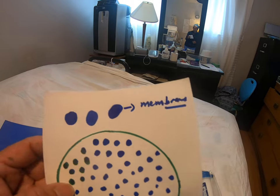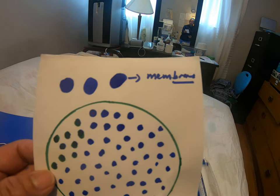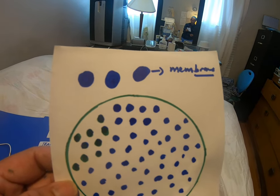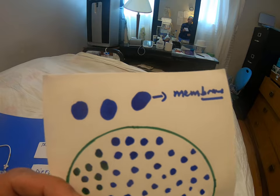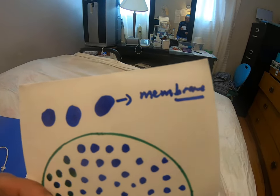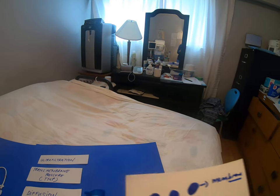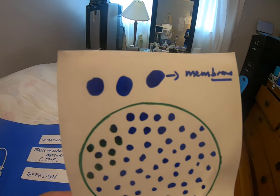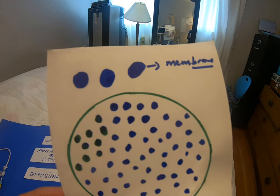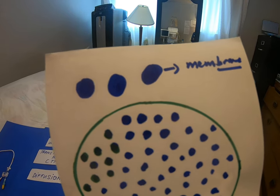Around each fiber we have a membrane. Inside the fiber is where blood flows. So blood is inside each fiber, and outside the fiber is our dialysate. The blood and the dialysate are separated by that membrane. The inside of the fiber — where blood is — has positive pressure, and outside the fiber the dialysate has negative pressure.